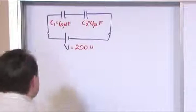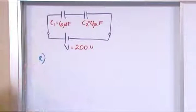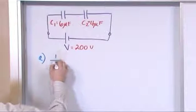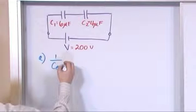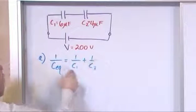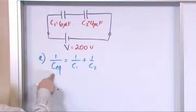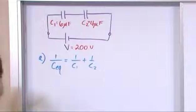First part: what is the equivalent capacitance? Well, these are in series, so we learned that for an equivalent capacitor in series, it's just 1/C1 + 1/C2. And that is equal to - it's not equal to the equivalent capacitor, it's equal to 1 over the equivalent capacitor.